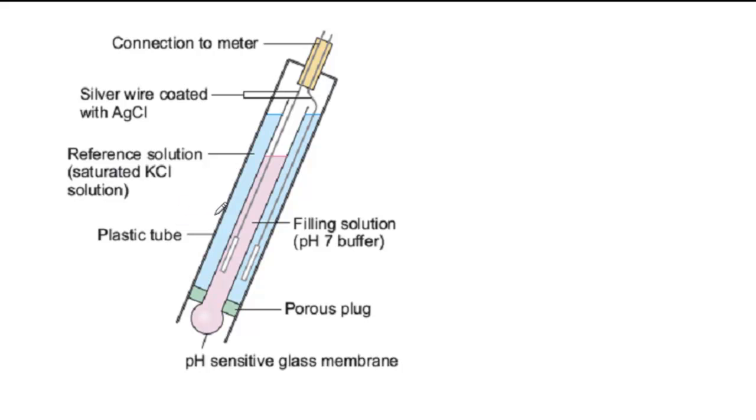First, the reference electrode, which is in this outer plastic tube. It contains a silver wire coated with silver chloride, and that's immersed in a saturated solution of potassium chloride. This gives a reference electrode with a fixed potential.